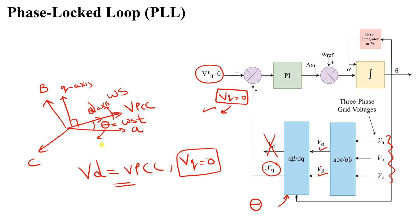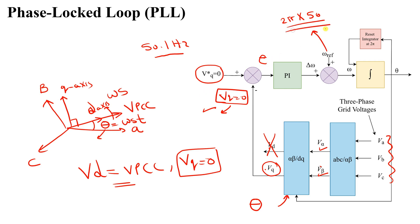If this error equals zero it means we achieved our objective and obtained the theta that makes the D-axis oriented on VPCC. The error goes into a PI controller that gives us delta omega — the change in frequency. We have an omega reference, the reference frequency of 2π × 50 Hz or 60 Hz. In reality it cannot be exactly 50 Hz; it can be, for example, 50.1 Hz.